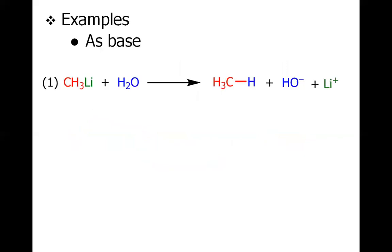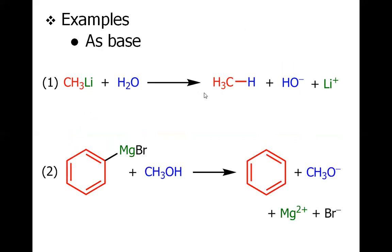More examples: methyl lithium treated with water will give methane as the major product, and phenyl magnesium bromide treated with methanol will give benzene. Here we deliberately showed one example of organolithium and another of Grignard reagent, but the product is the same — both are basic in nature and will pull the acidic proton from the compound, causing the organometallic compound to be destroyed.